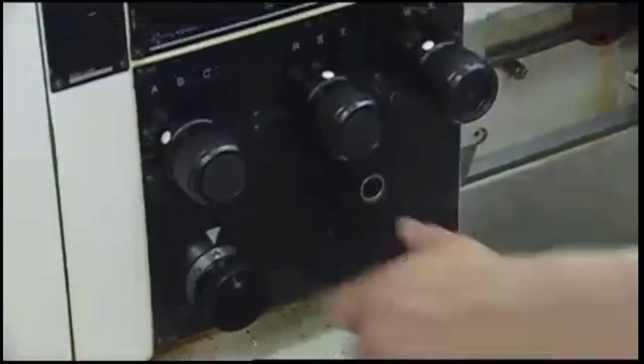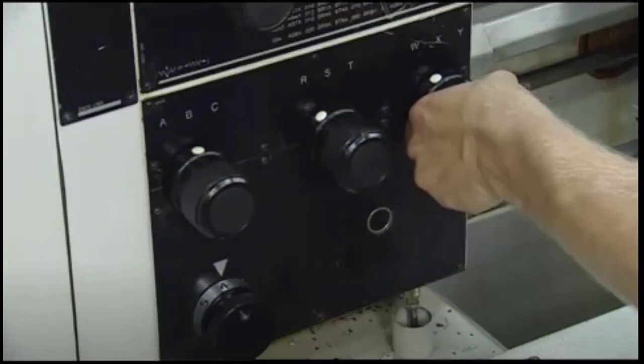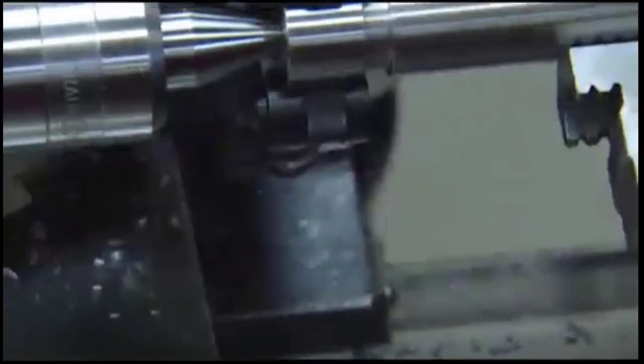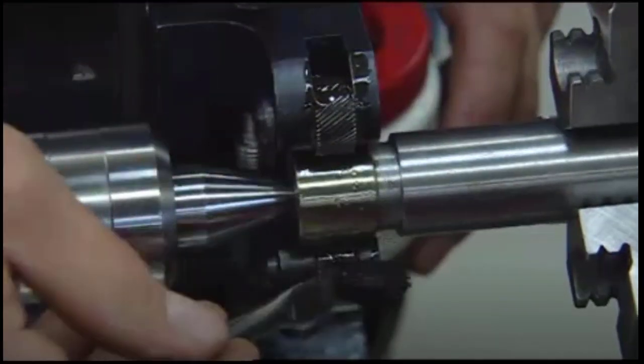Next, set the carriage to a heavy feed rate, such as 15 or 20 thousandths of an inch per revolution. Once the carriage feed has been set, apply cutting fluid to the knurling rolls and the workpiece.